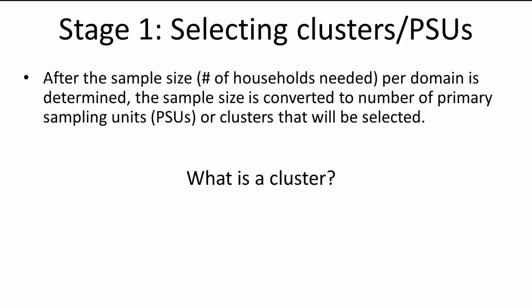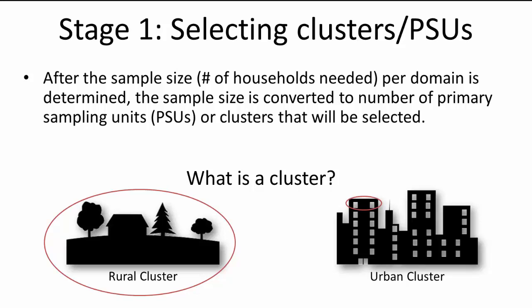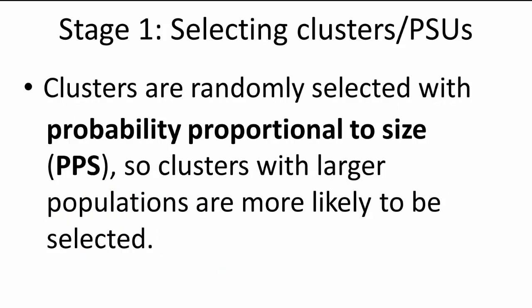Clusters are usually the census enumeration area, sometimes called just EA. In rural areas, a cluster is usually an entire village, part of a large village, or a group of small villages. In urban areas, a cluster is usually a city block. In some urban areas with high population density, a cluster or EA can be an apartment building or one floor of a very large apartment complex. Clusters are randomly selected with probability proportional to size, so clusters with larger populations are more likely to be selected. This sampling procedure is aimed to increase sampling efficiency and sample representativeness.